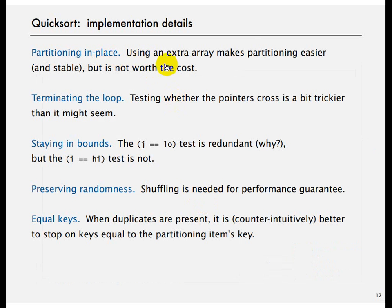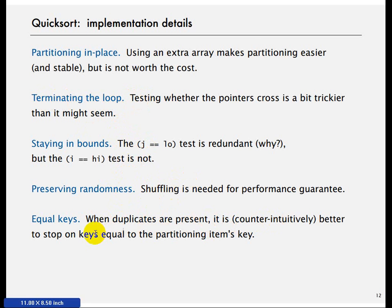Some important properties: Quicksort is in-place — it does not use any additional memory. You have to be careful about whether the pointers cross and that they stay in bounds. Randomness is important, and when duplicates are present, it is better to stop on keys equal to the partition item's key — we will look at equal keys later.